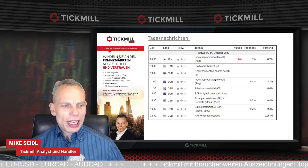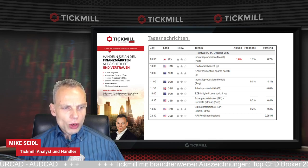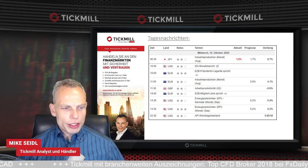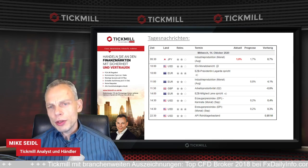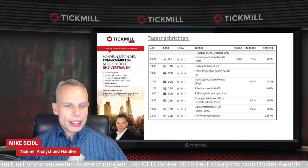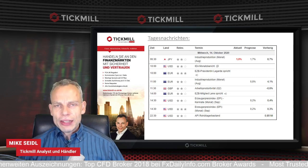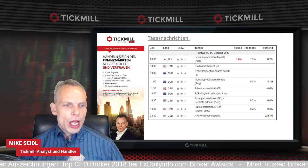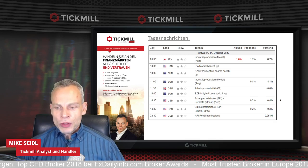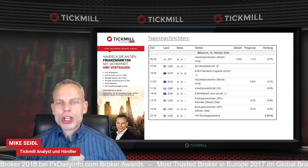Um 11:30 Uhr gibt es Daten zur Arbeitsproduktivität. Aus den USA kommen dann um 14:30 Uhr der Erzeugerpreisindex für September. Am späten Abend um 22:30 Uhr gibt es den API-Rohöl-Lagerbestand. Die klassischen Lagerdaten kommen dann morgen Nachmittag als EIA-Daten.